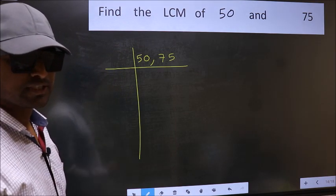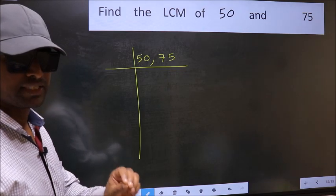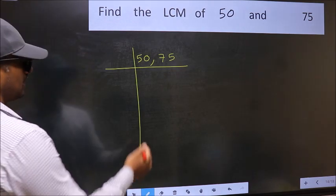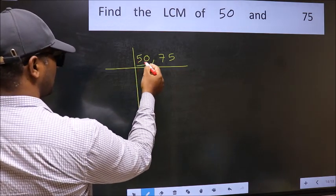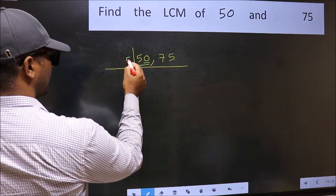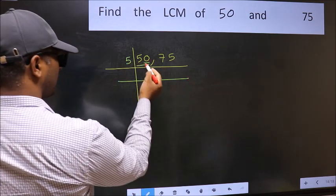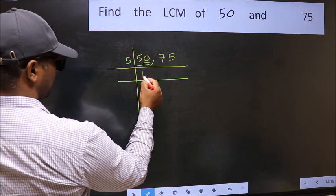Now you should focus on the first number which is 50 here. In this number, last digit is 0, so take 5. When do we get 50 in the 5 table? 5 tens is 50.